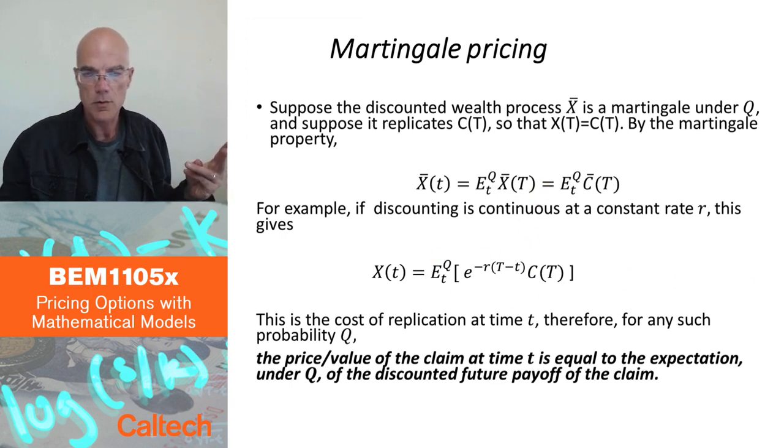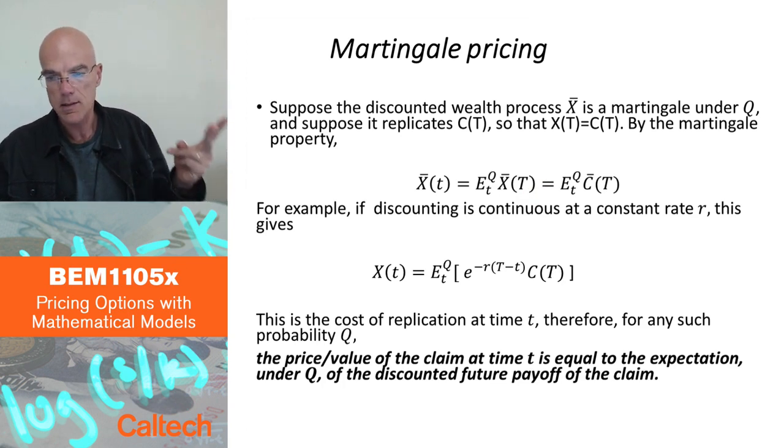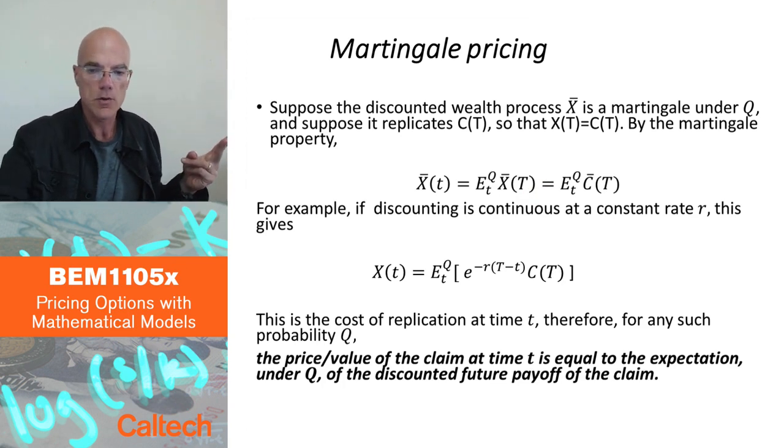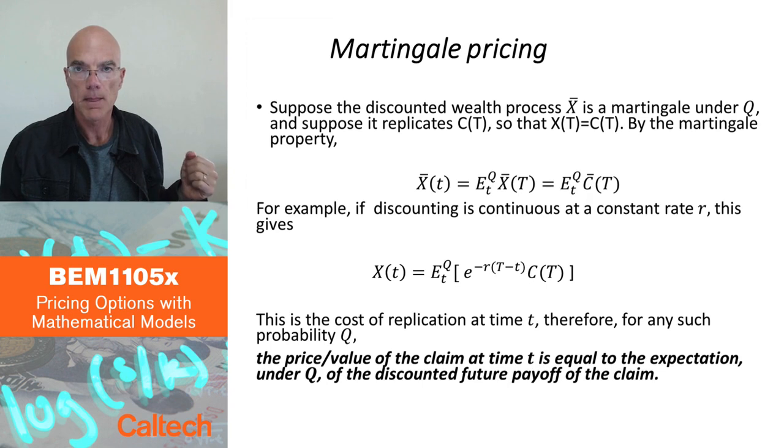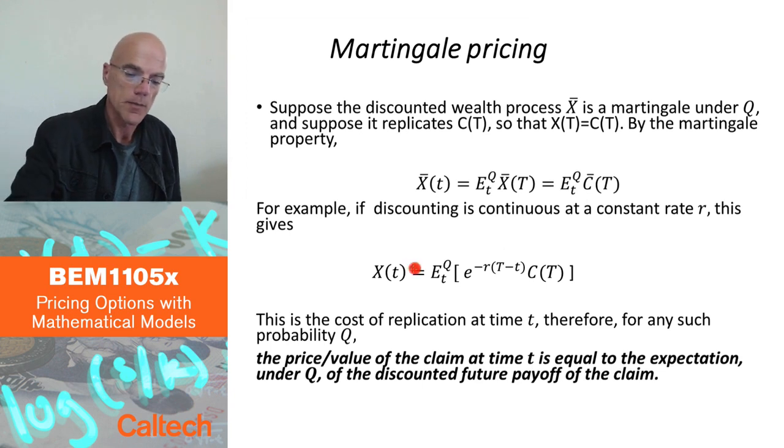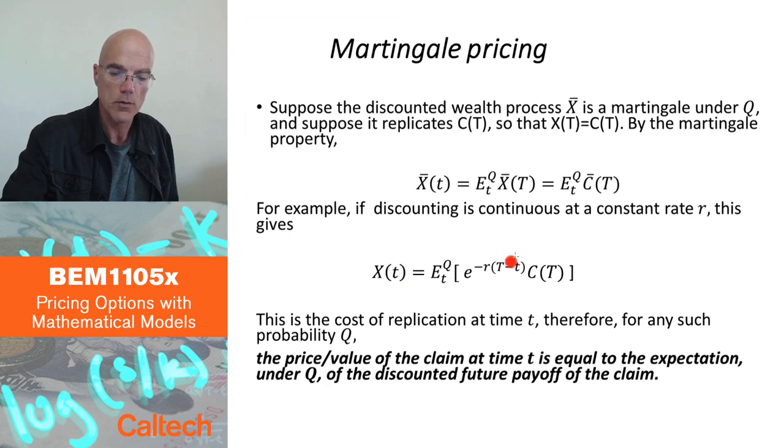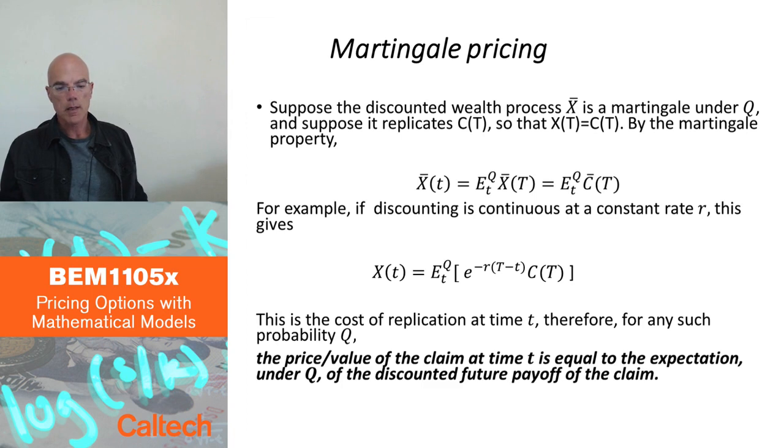One assumption is there exists a Martingale probability under which discounted wealth processes is a Martingale. And the other assumption is that I can replicate this claim. If I can replicate this claim, then under any Martingale probability Q, the price of the option is the cost of replication. Therefore, it's equal to the expected value under Q of the discounted payoff.